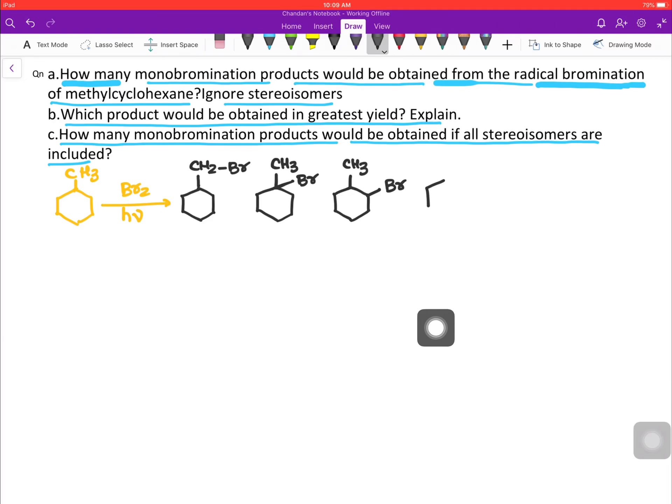And then it can proceed to this position, and the last will be one more product like this. So these are the five monobrominated products that we will get after the bromination.